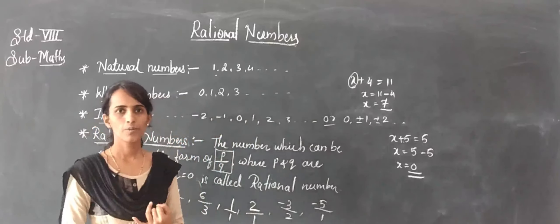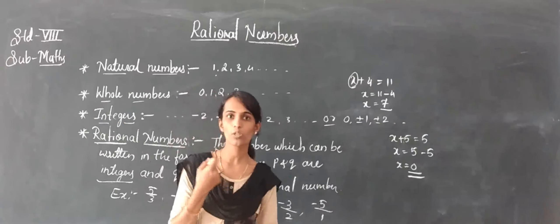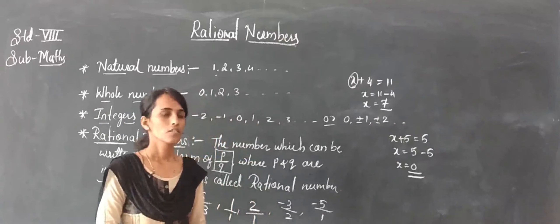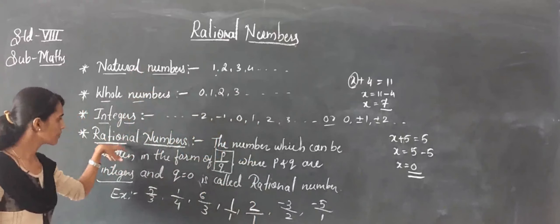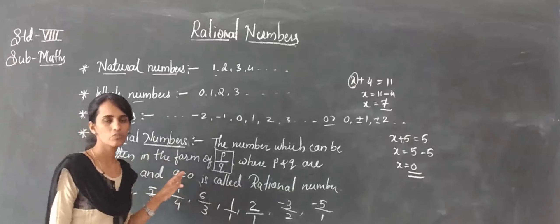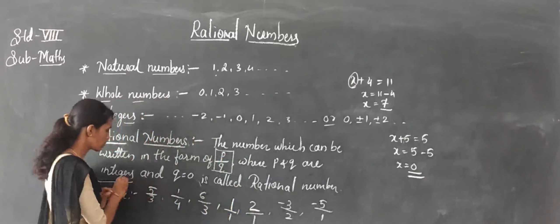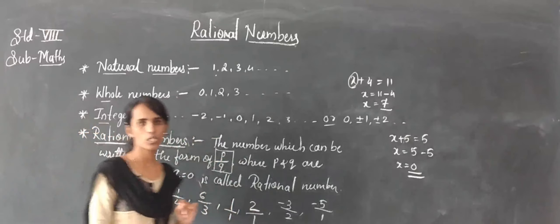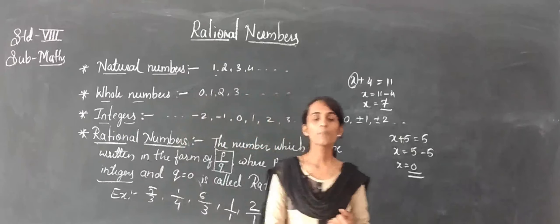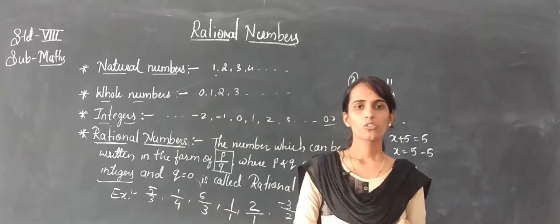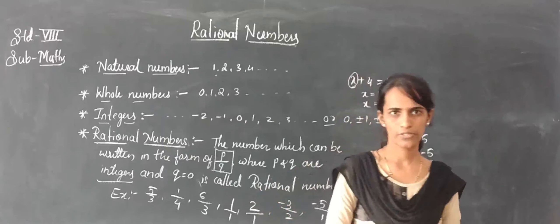So today we learned about the different types of numbers, where we use them, and why all of them are useful. The new type we studied is rational numbers — numbers in the form of p by q, where p and q are integers and q does not equal 0. Now, depending on these numbers, some properties are there — closure property, associative property, commutative property — which we are going to study.